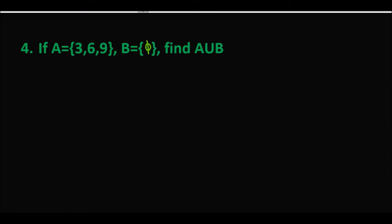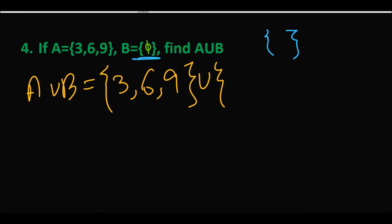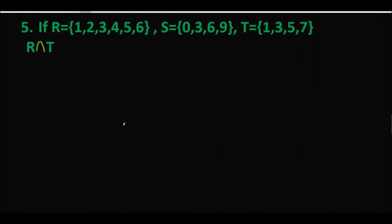उसके बाद question number 4 है जिसमें set A दिया है और B = ∅ (empty set) है। ∅ symbol empty set को represent करता है — यह ∅ भी लिखा हो सकता है और {} भी लिखा हो सकता है। तो A union ∅ find out करना है। A = {6, 9}, union ∅ — चूँकि ∅ empty set है, इसलिए A union ∅ = {3, 6, 9}. Empty set से कोई change नहीं आता।